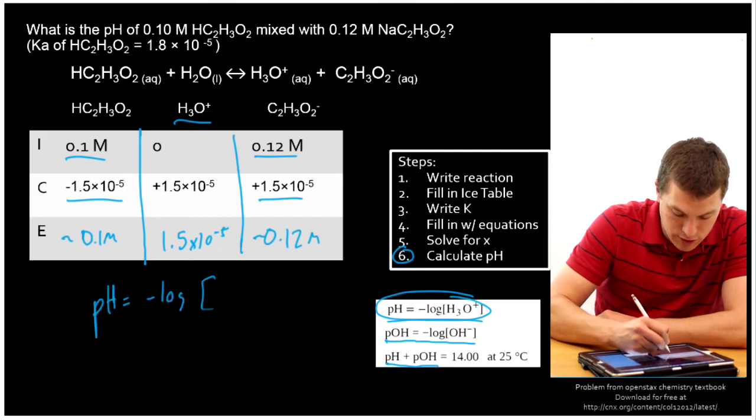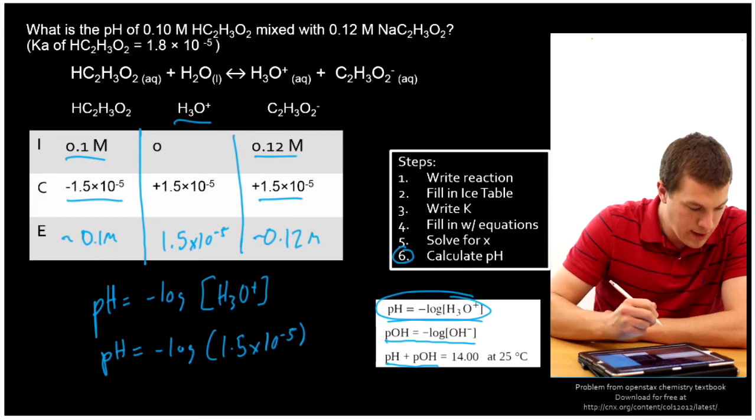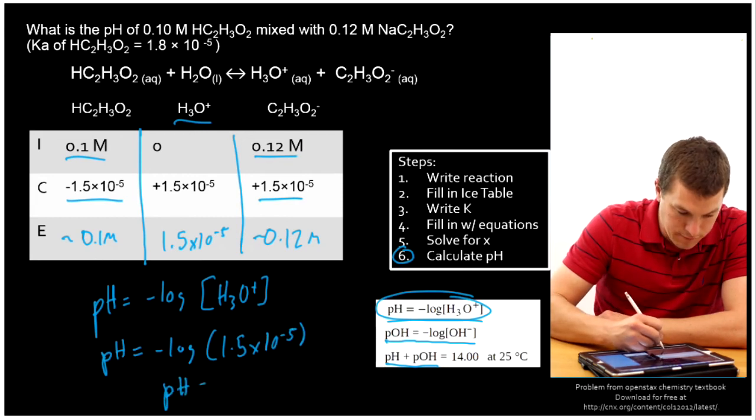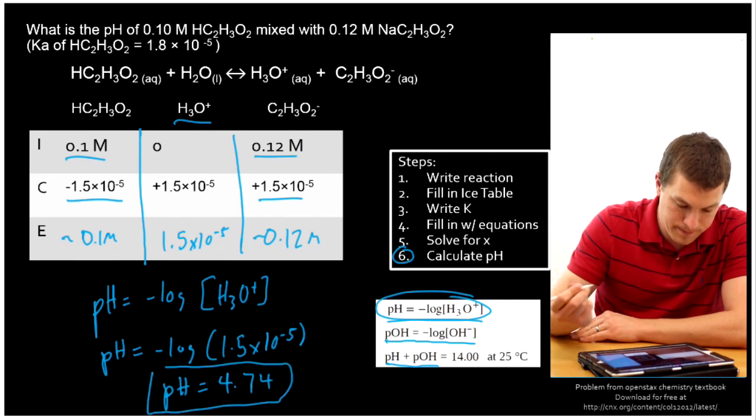Since we have H3O+, I can just directly calculate pH, which is equal to negative log of my hydronium ion concentration. So pH is equal to negative log of 1.5 times 10 to the minus 5. And that will give me a pH of 4.74. There we go. That's my pH.